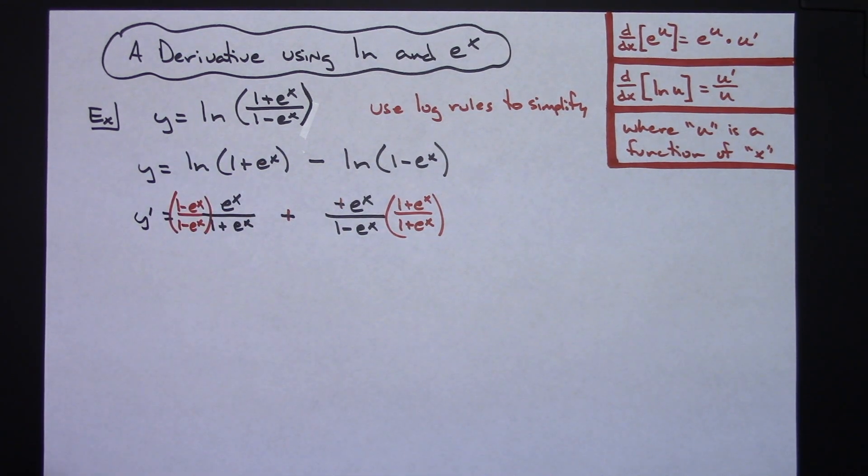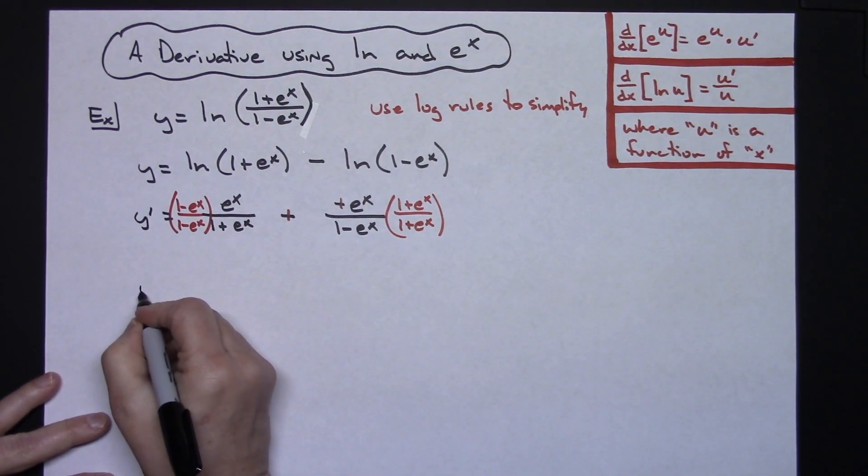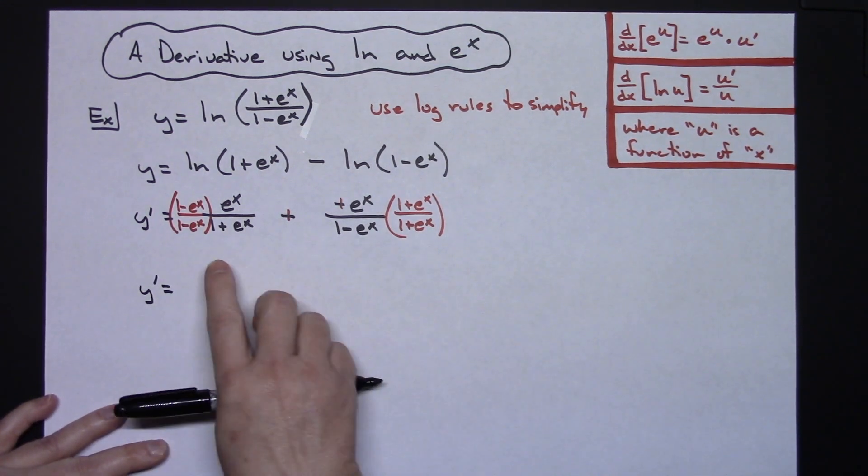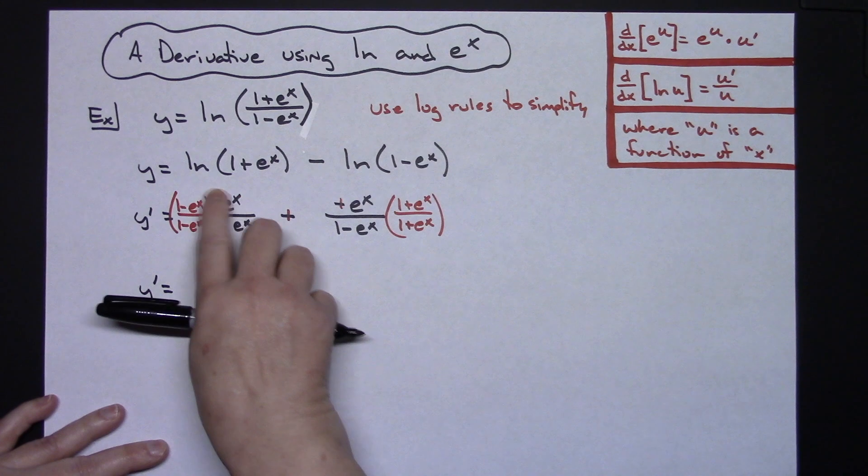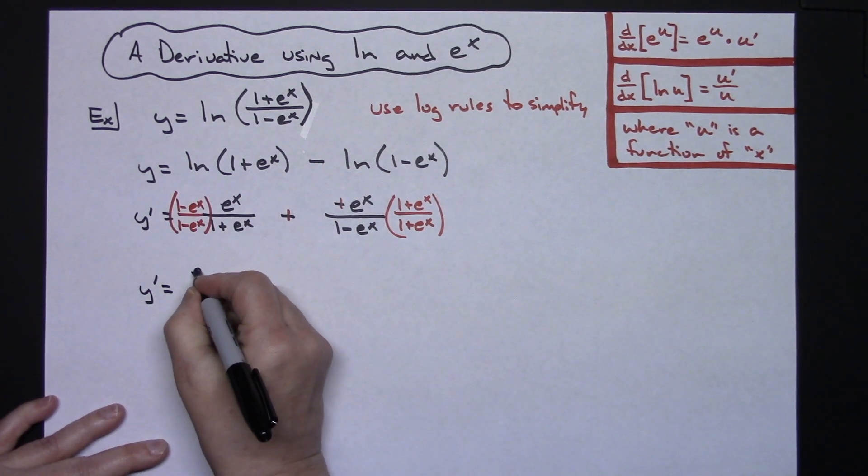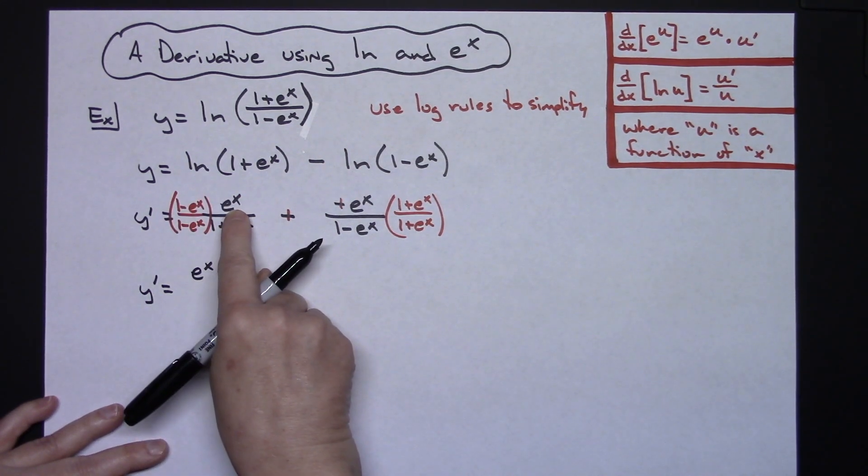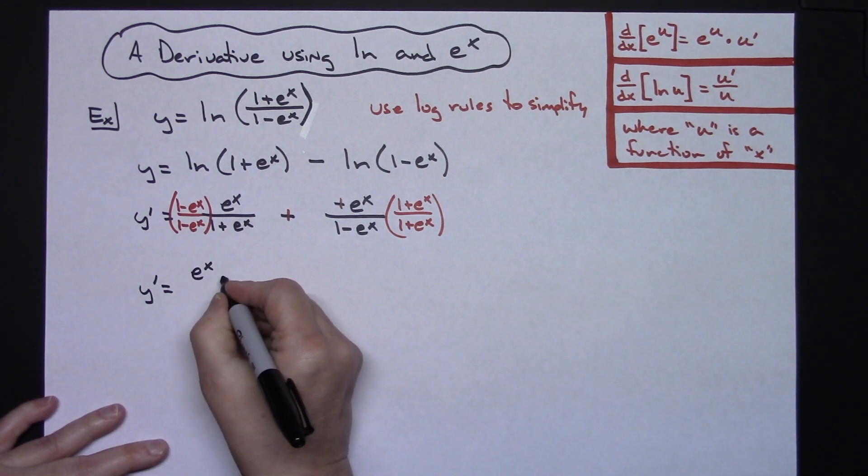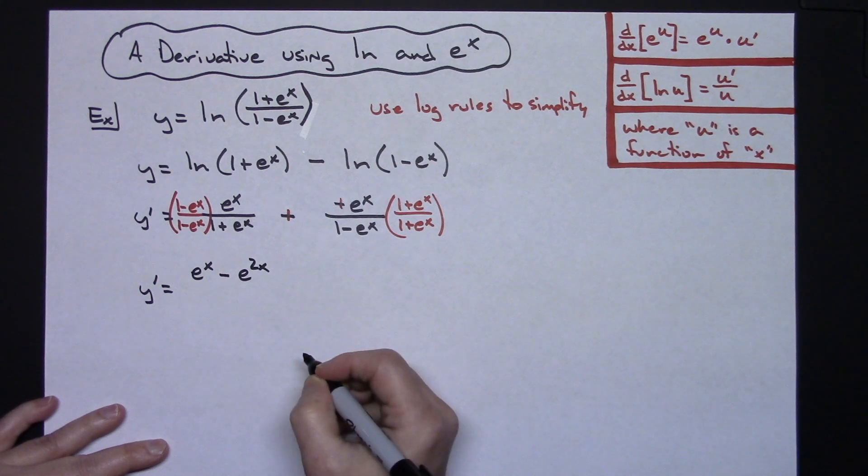We're going to multiply there. We're going to focus on just that numerator because we know what the denominator is going to be. So distributing right here I'm going to have an e to the x and then e to the x times e to the x I'm going to have as minus e to the 2x.